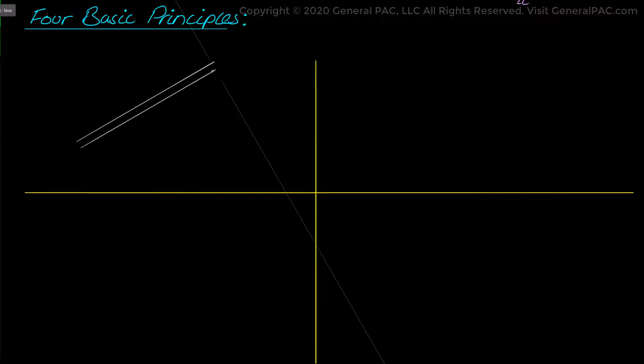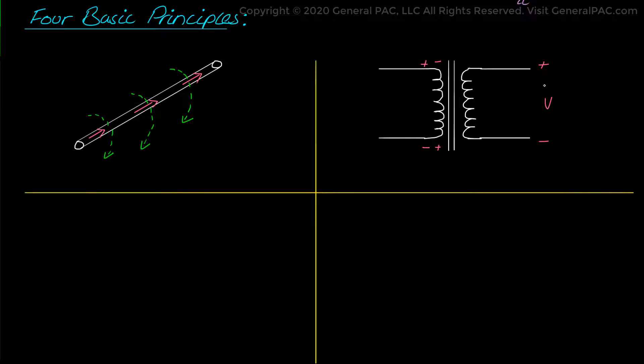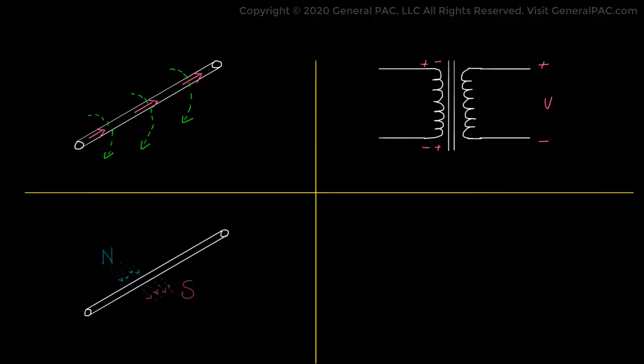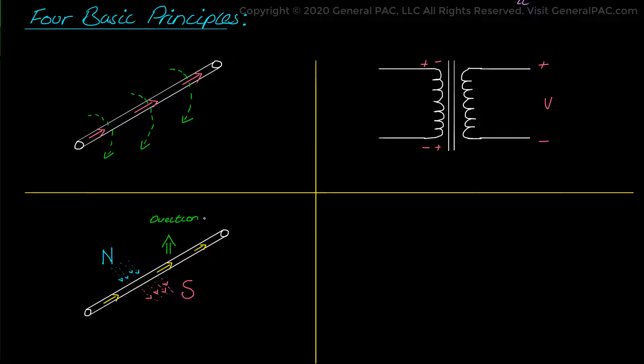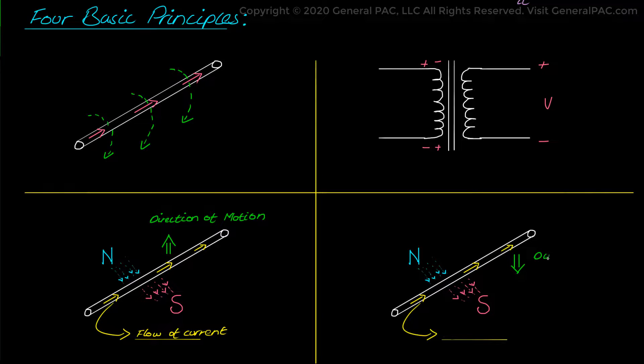Number 1. Current-carrying wires produce a magnetic field in the area around it. Number 2. A time-changing magnetic field induces a voltage in a coil of wire if it passes through that coil. This is the basis of a transformer action. Number 3. A current-carrying wire in the presence of a magnetic field has a force induced on it. Now, this is the basis of a motor action. And number 4. A moving wire in the presence of a magnetic field has a voltage induced in it. And this is a basis of a generator action.